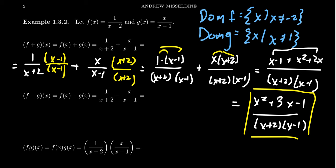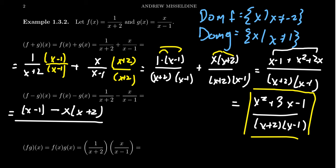We could try to factor the numerator x²+3x-1 and see if it cancels with any term in the denominator. But factoring -1 only gives 1 and -1, which do not add to 3. So the numerator is irreducible and this fraction is fully reduced. For subtraction, it's basically the same thing — find a common denominator: (x-1) minus x·(x+2), all over (x+2)(x-1).